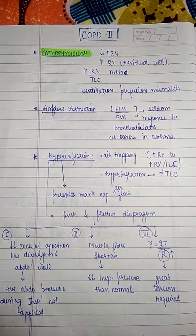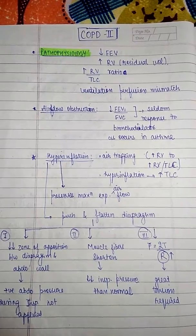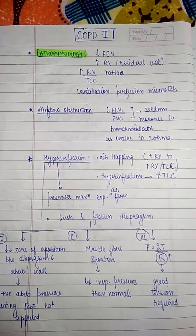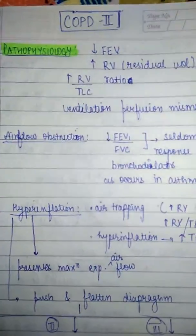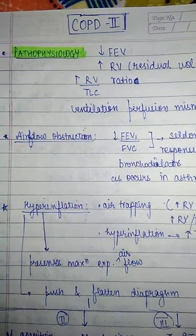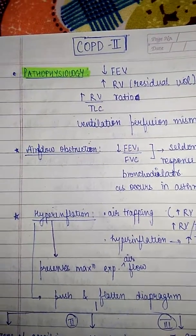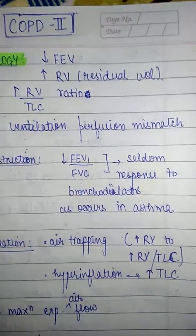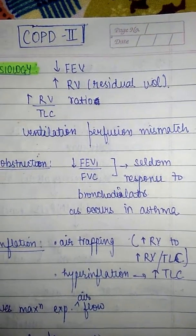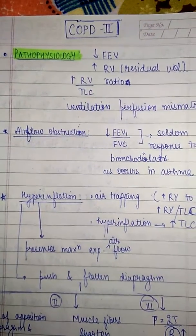Welcome to Dr. Transposons YouTube channel. In COPD part 2, we discuss the pathophysiology: there is decreased forced expiratory volume due to obstruction, residual volume will increase, and the ratio of residual volume to total lung capacity will increase. There will also be ventilation-perfusion mismatch.